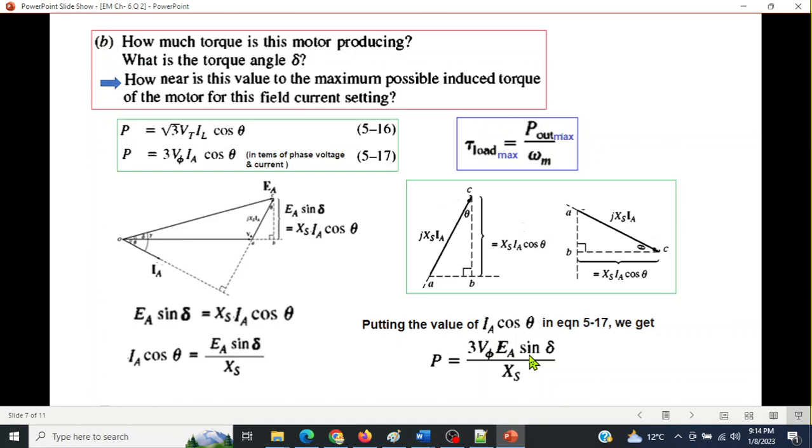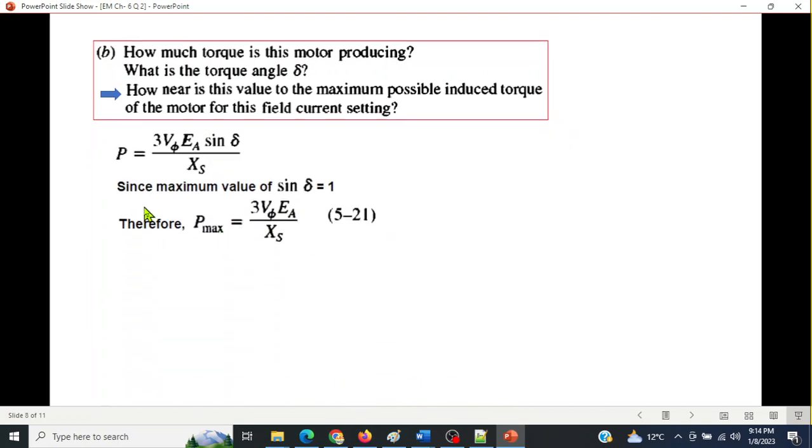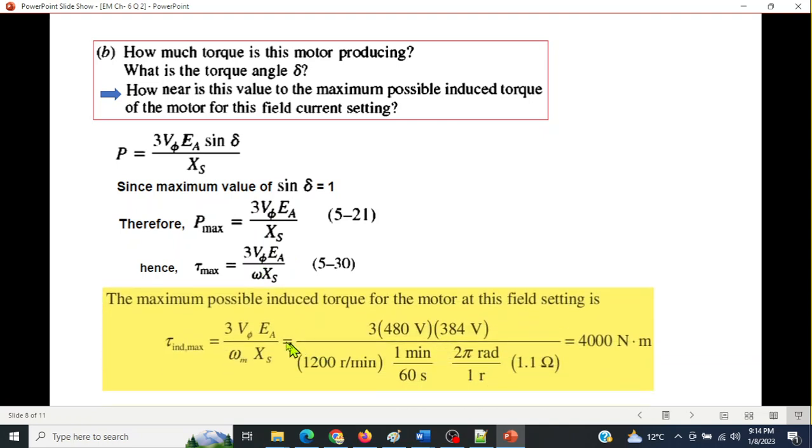Now, how can we maximize this? These are all the terms are fixed here. The only variable is this delta. So we can vary the angle delta. And the maximum value of sine delta is 1. So we'll use that to maximize this. Since maximum value of sine delta is 1, therefore, putting that value, we get P maximum. And now putting this value in P maximum equation, which was P maximum divided by omega s, we get this equation. And now plugging in the values, we know all the values. So our answer is 4,000 Newton meters.